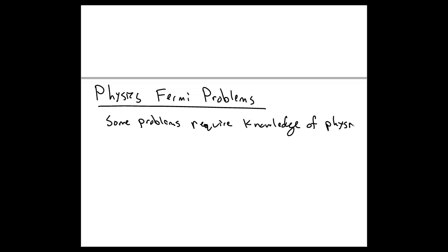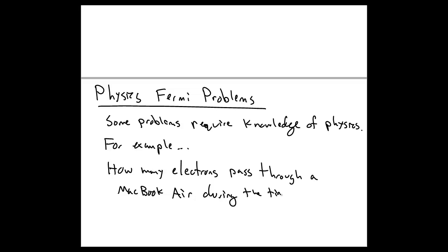So not all problems are the types of problems above. There's another type of problems which I might classify as physics Fermi problems. And these are problems that require some advanced knowledge, or basic knowledge rather, of physics. You need to know some physics in order to solve it. So an example of a physics Fermi problem might be how many electrons pass through a MacBook Air during the time it takes the laptop to consume a million joules.